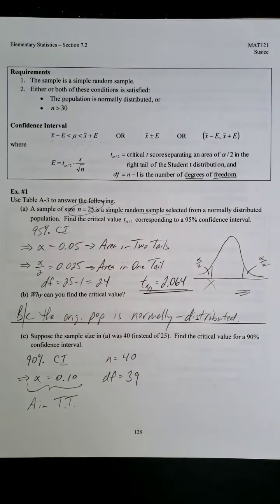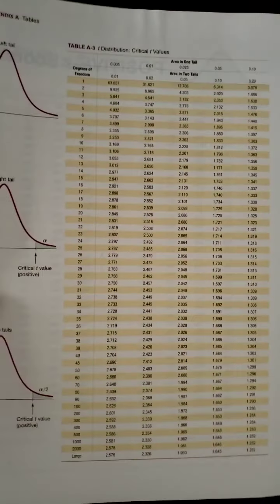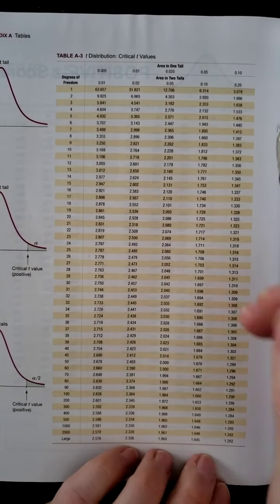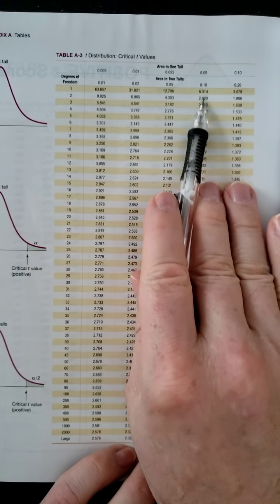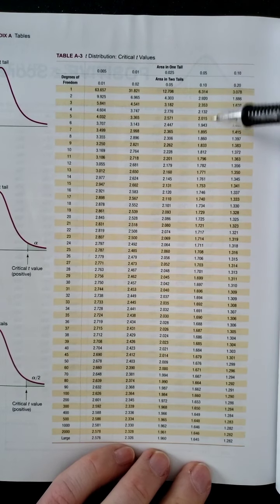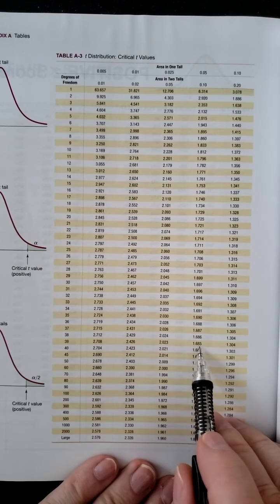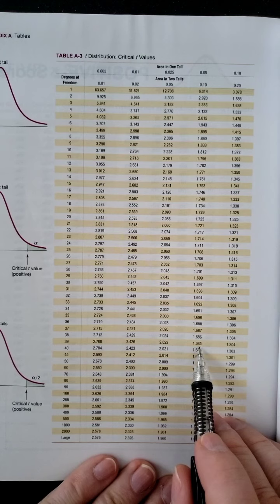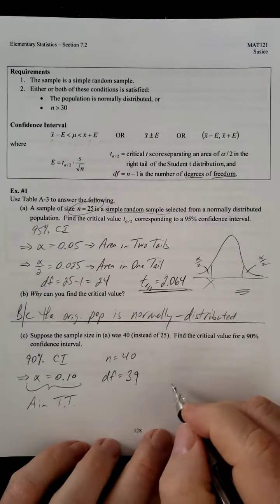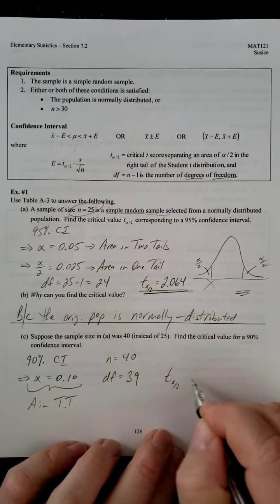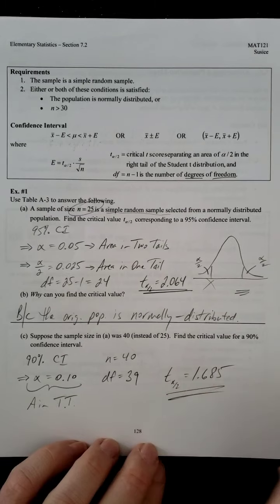And so, that's all we need. That's all the information we need to get our T-score. So, we want area in two tails to be 0.10. So, that's going to be this fourth column here. So, now we can go down to 39. So, 39, fourth column, 1.685. So, T sub alpha over 2 is 1.685. Done.